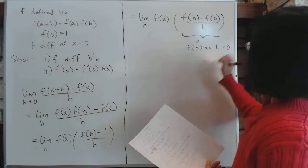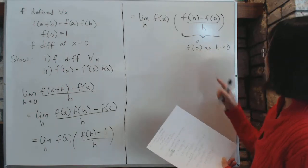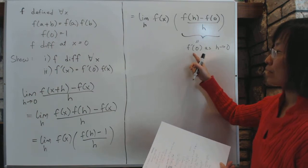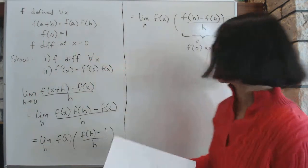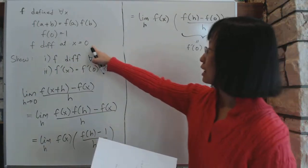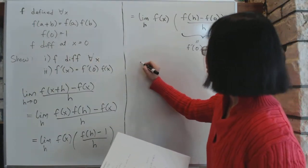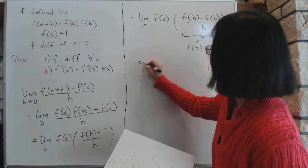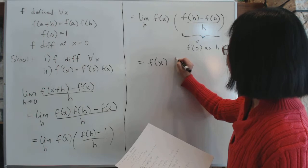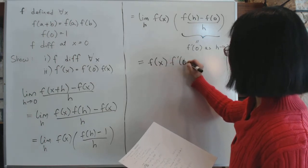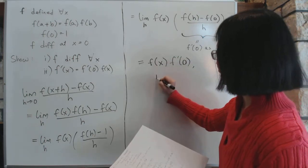So f'(0) does exist, is given to us—f is differentiable at x equals 0—which means the whole thing is going to be equal to, as you let h go to 0, f(x)·f'(0). So that is, the limit exists.